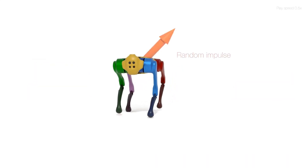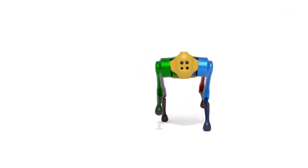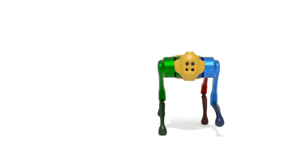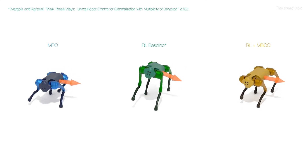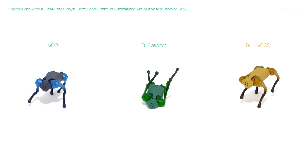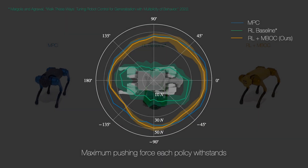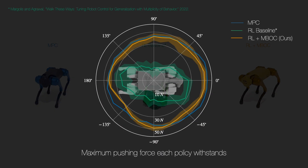During RL training, we randomly sample three-dimensional linear and angular impulses and apply them to the robot in the middle of the episode. This perturbation simulation allows us to train a policy capable of resisting disturbances. Thanks to this strategy, our policy shows better resilience to perturbations compared to the baseline policy, namely the walk-this-way policy, which relies on a reward function based on heuristics.